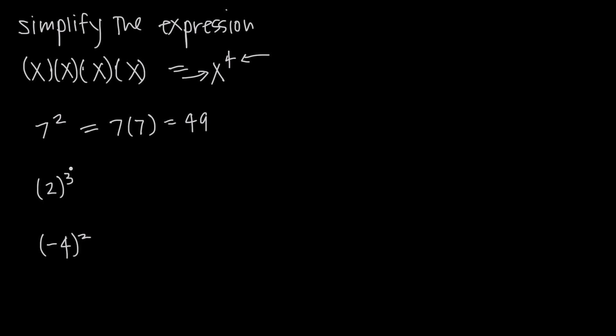Here we have a base of two and an exponent of three. This is two to the third, or two to the third power, or two to the power of three. This means multiply two by itself three times, or multiply together three factors of two. So this is two times two times two. Two times two is four, times two is eight.